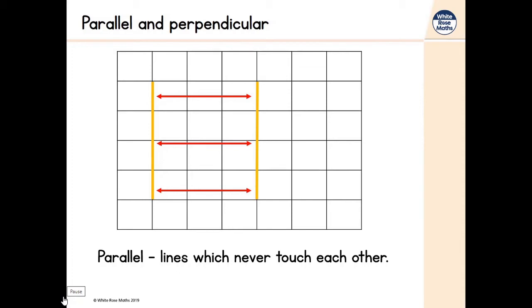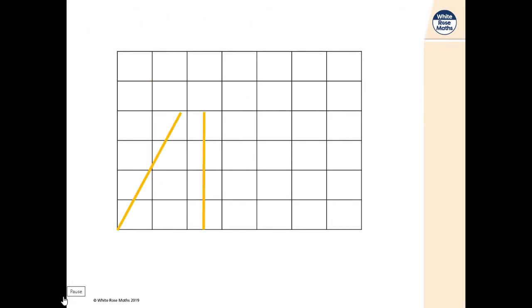Parallel lines are never going to touch each other. If you imagine those lines carrying on above or below the screen, they would always be three squares apart. But look at these lines — even though they don't meet on the drawing, imagine them continuing upwards and they would meet, so they're not parallel. We can also see they're not the same distance apart all the time — much further apart at the bottom than at the top. These two diagonal lines, however, are parallel — if you imagine them continuing they would never meet.